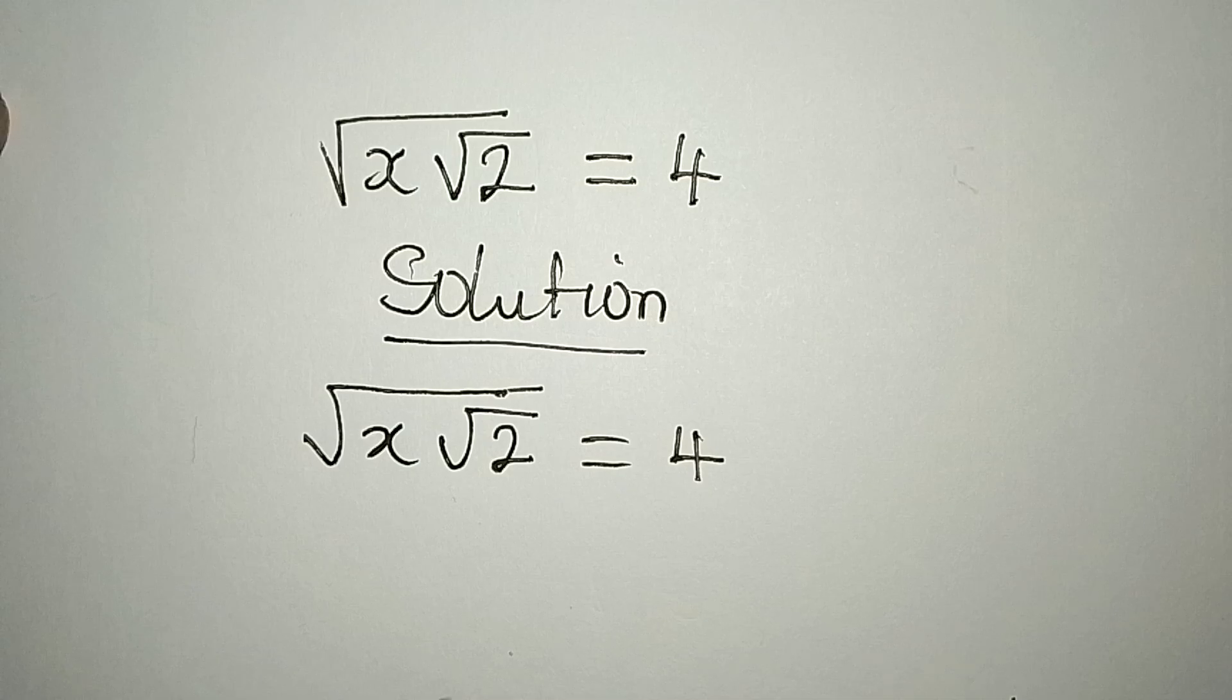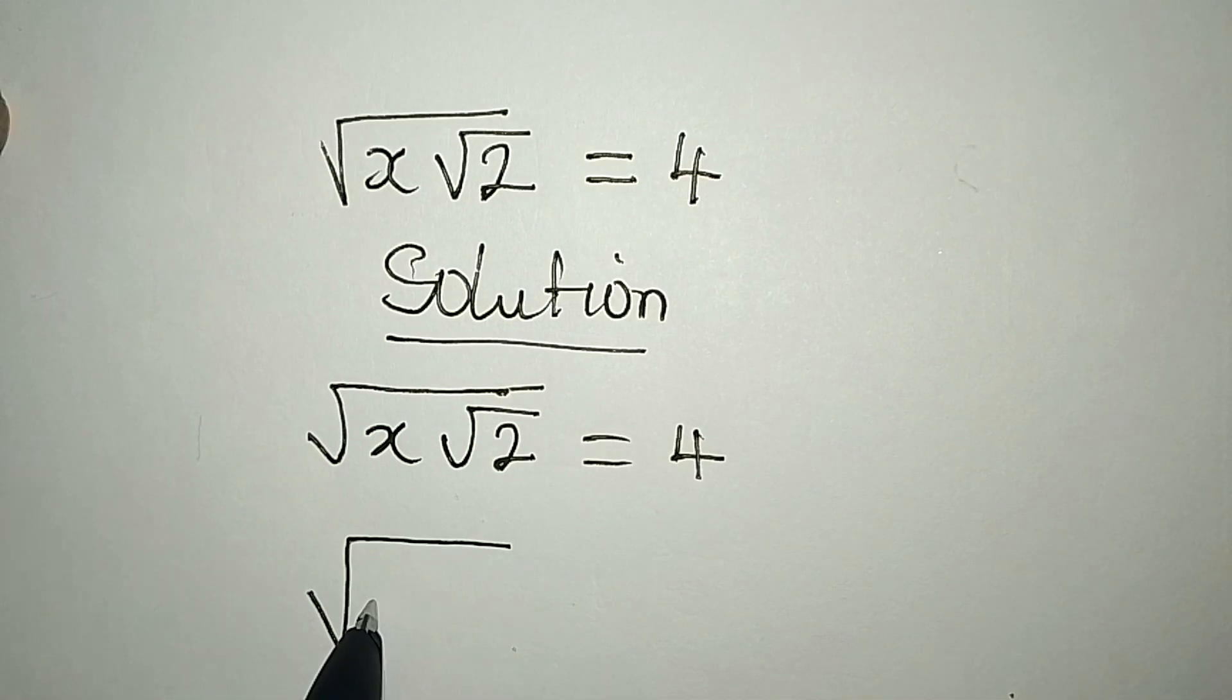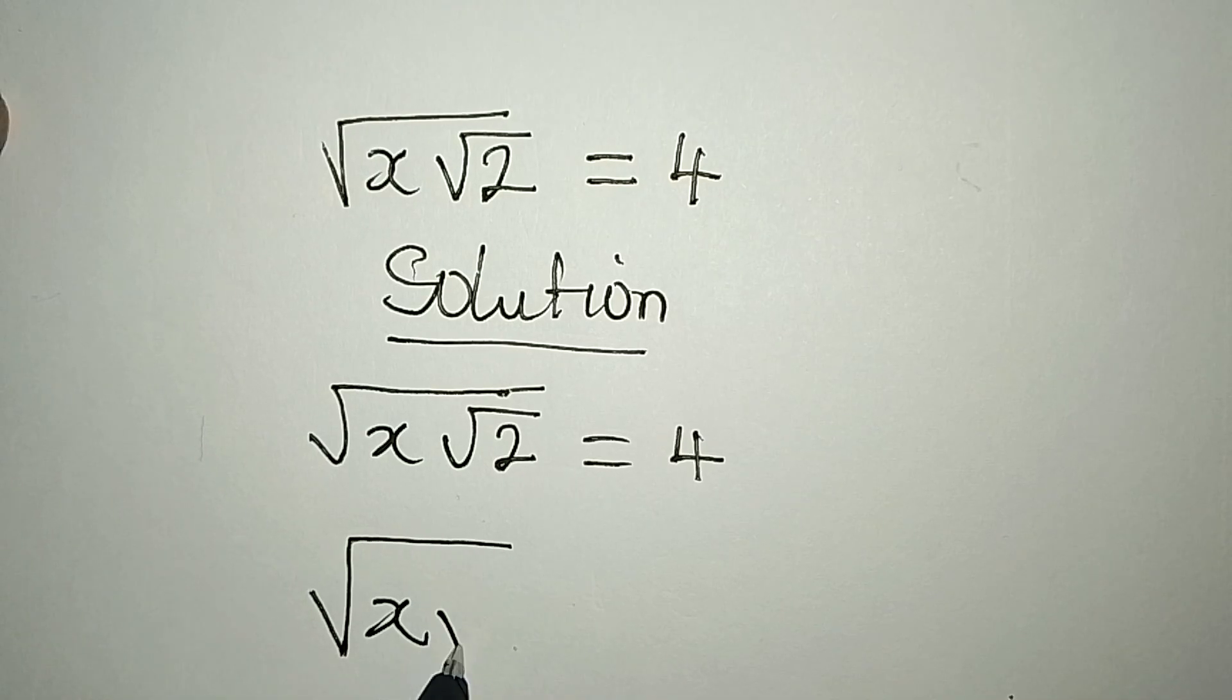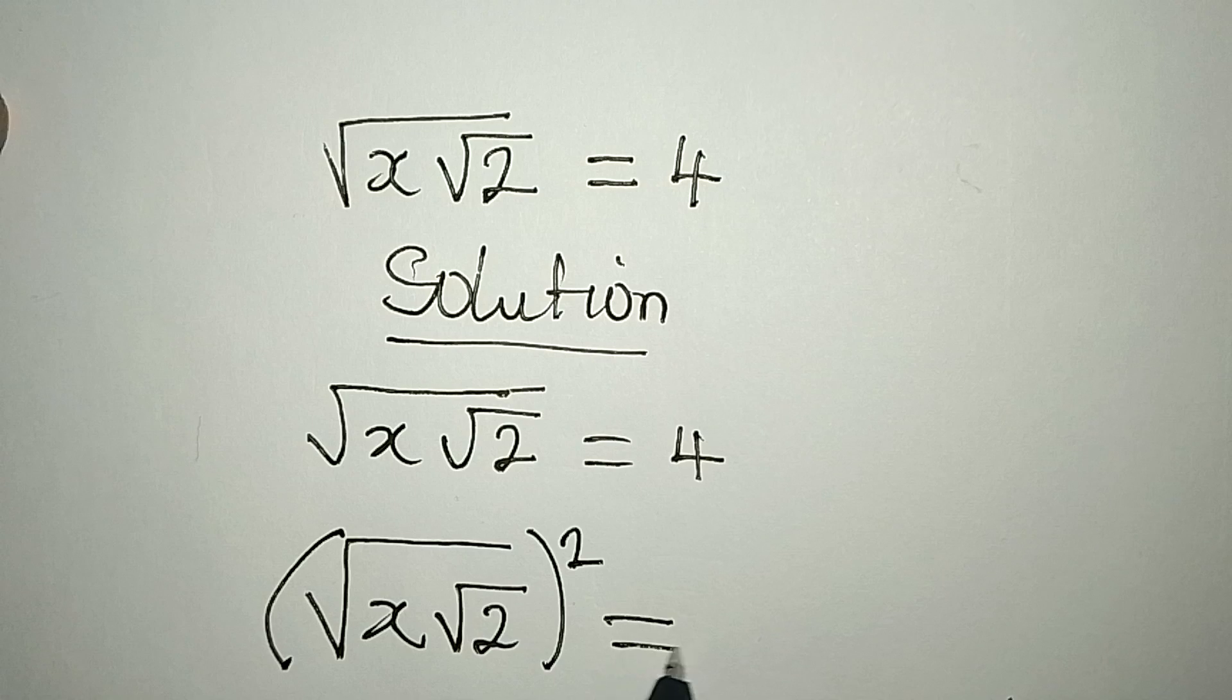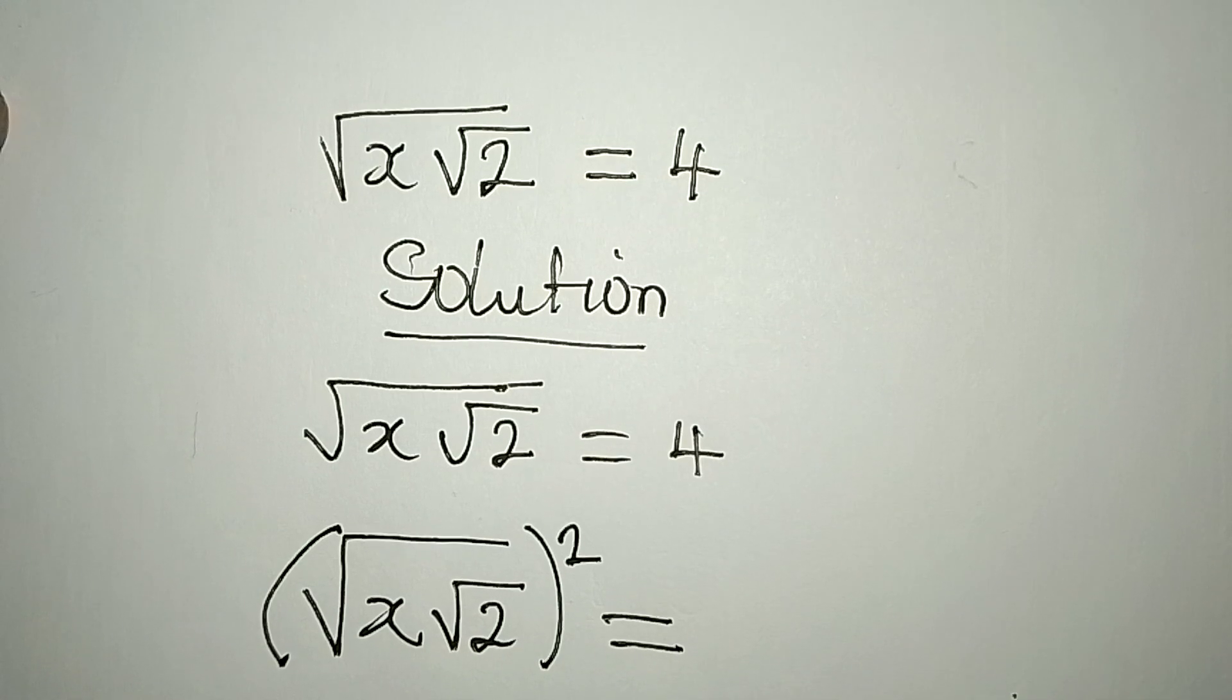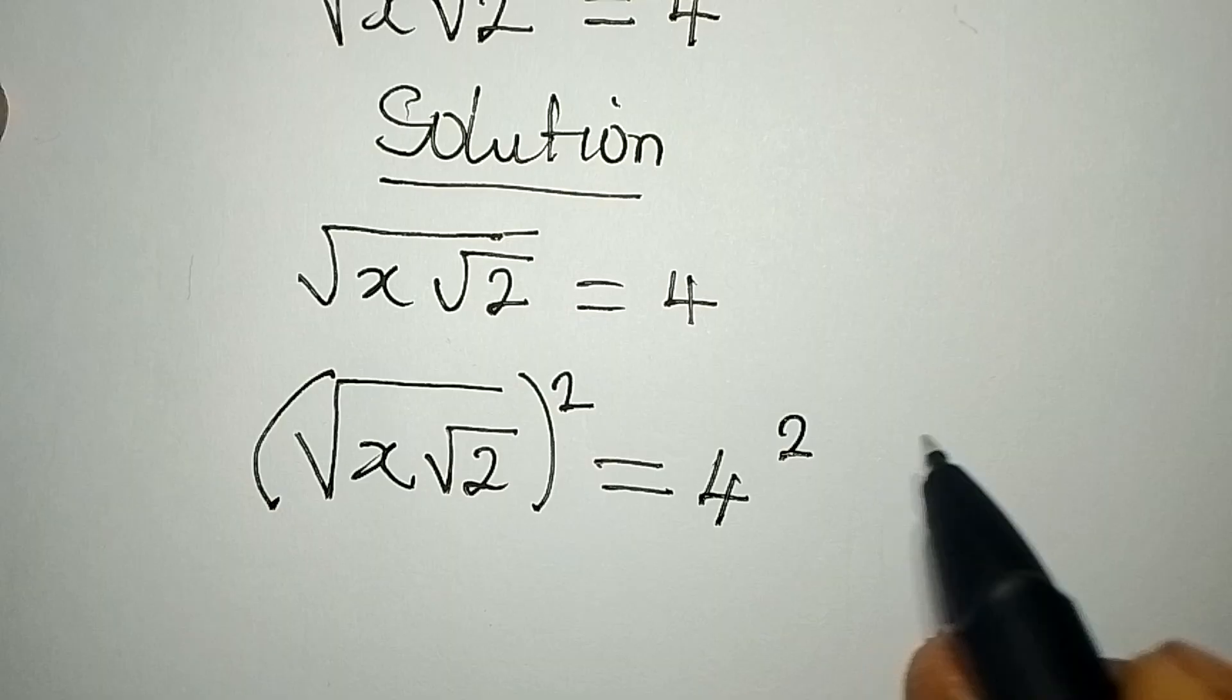This is what we're going to do. The first thing I'm going to do is to square square root of x square root of 2. So I'm going to square the whole of this, and what you do on one side must be done on the other side. So I have 4 then square.